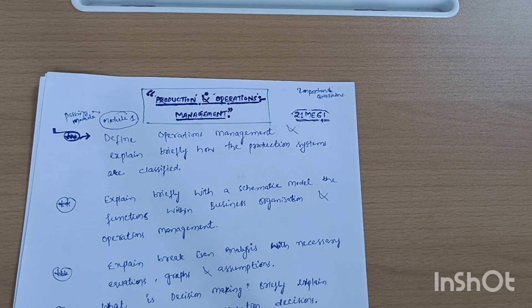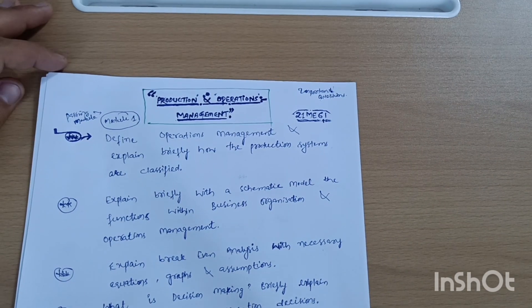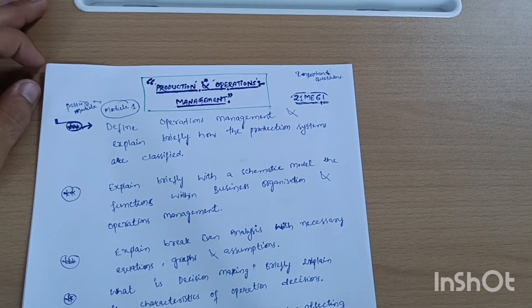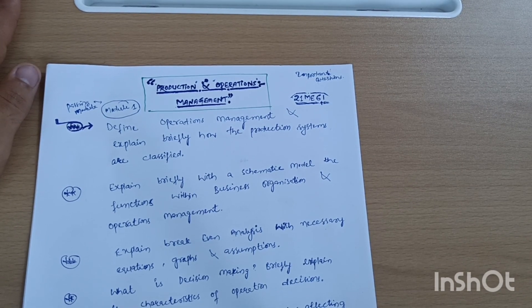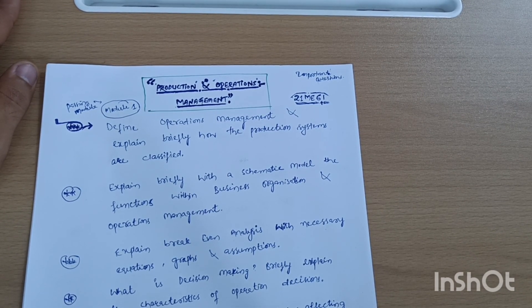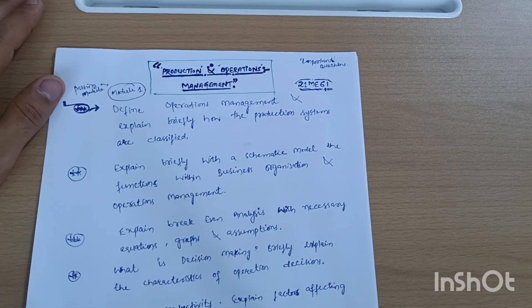The subject code is 21T1ME61. This is not just a subject in which you can only pass, this is a scoring subject. You can easily score more than 40, more than 50 marks. Let's start with the important questions.